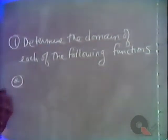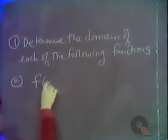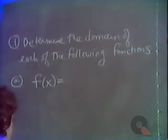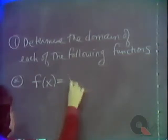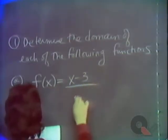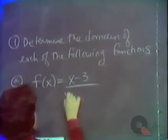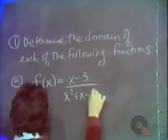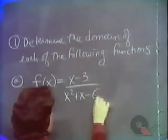The first part: the function f defined by the equation f of x is equal to x minus 3 over x squared plus x minus 6.